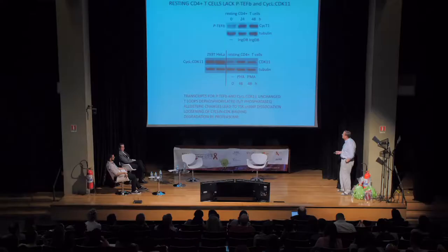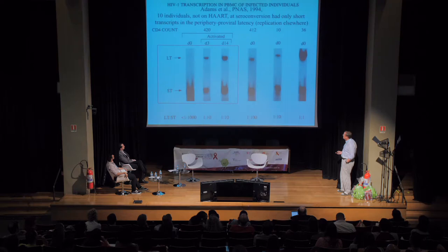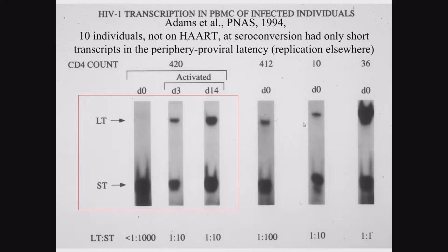This finding was confirmed in 1994 when we looked at HIV-infected individuals after seroconversion. We saw in the periphery nothing but short transcripts, which do not require either P-TEFb or Cyclin-L CDK11. But when we reactivated the cells, we were able to fully restore HIV replication and HIV transcription with long transcripts, and the virus came right out.